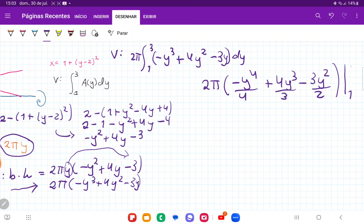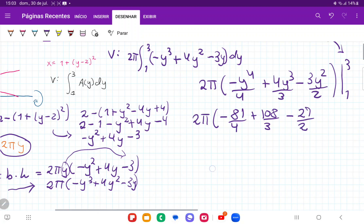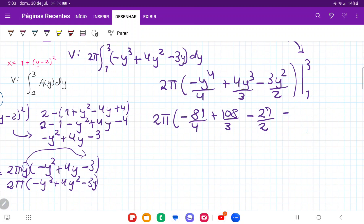Now I'm just going to plug in my boundaries. This gives me 2π times -81/4 + 4(27)/3 - 3(9)/2, which is -81/4 + 108/3 - 27/2, and then minus the lower part evaluated at 1. So minus -1/4, so plus 1/4, and then minus 4/3, and then plus 3/2. And so when I simplify this, this gives us 2π times, when I put this in my calculator, I get 8/3. Therefore, the answer is 16π/3.